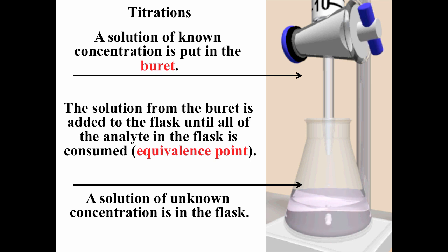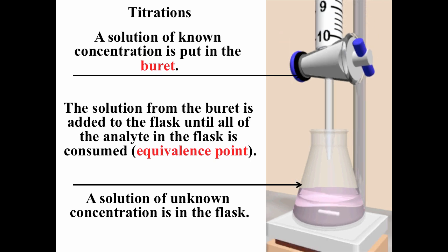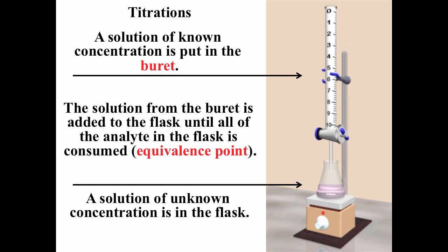When you get close to the equivalence point, you have to be very careful and go dropwise, one drop at a time. You should also use a stir bar to make sure that the color of the indicator stays present. Sometimes what will happen is you'll put a drop in and see the color of the indicator, but if you swirl it, it goes away because the solution isn't completely uniform. So always use a stir bar, and close to the equivalence point, go one drop at a time.